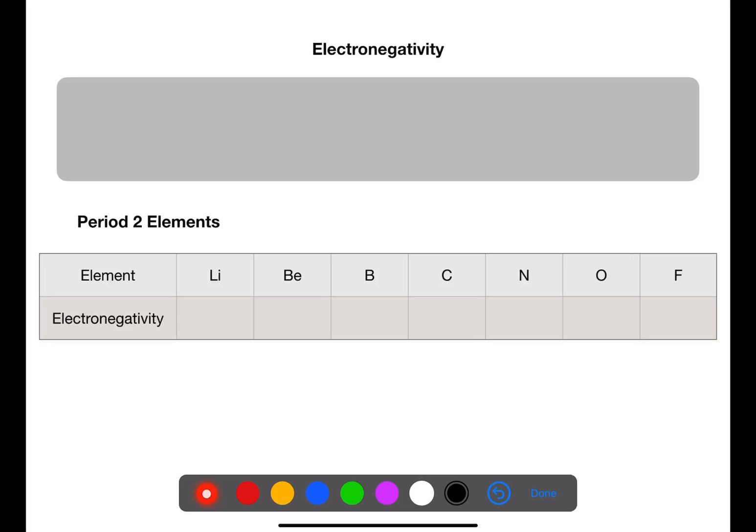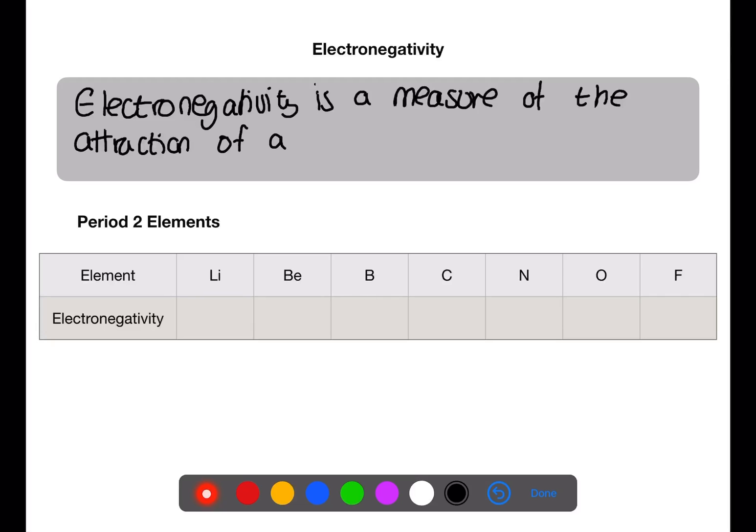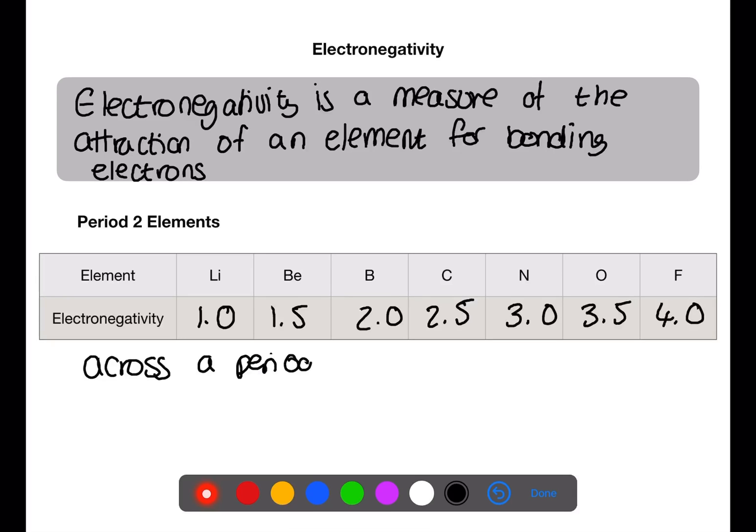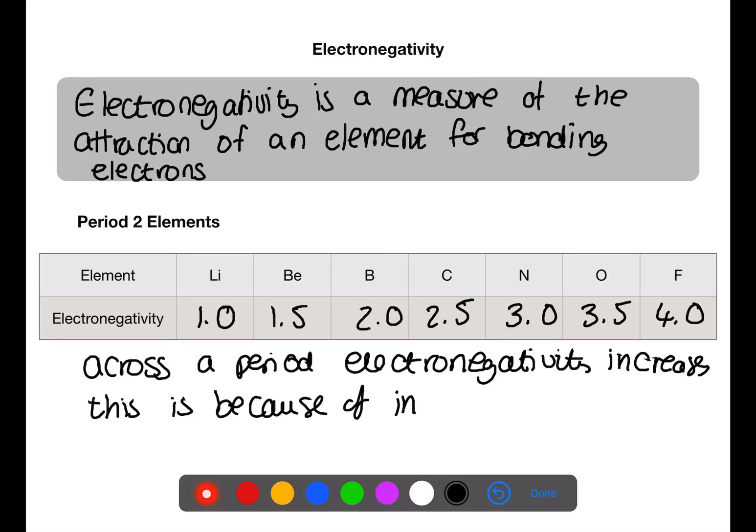The final trend we're going to look at is electronegativity. Electronegativity is a measure of the attraction of an element for bonding electrons. Use your data book to find the electronegativity of the period two elements. The electronegativity of lithium is 1.0. Beryllium is 1.5. Boron is 2.0. Carbon is 2.5. Nitrogen is 3.0. Oxygen is 3.5. And fluorine is 4.0. Across the period, electronegativity increases. This is because of increased nuclear charge.